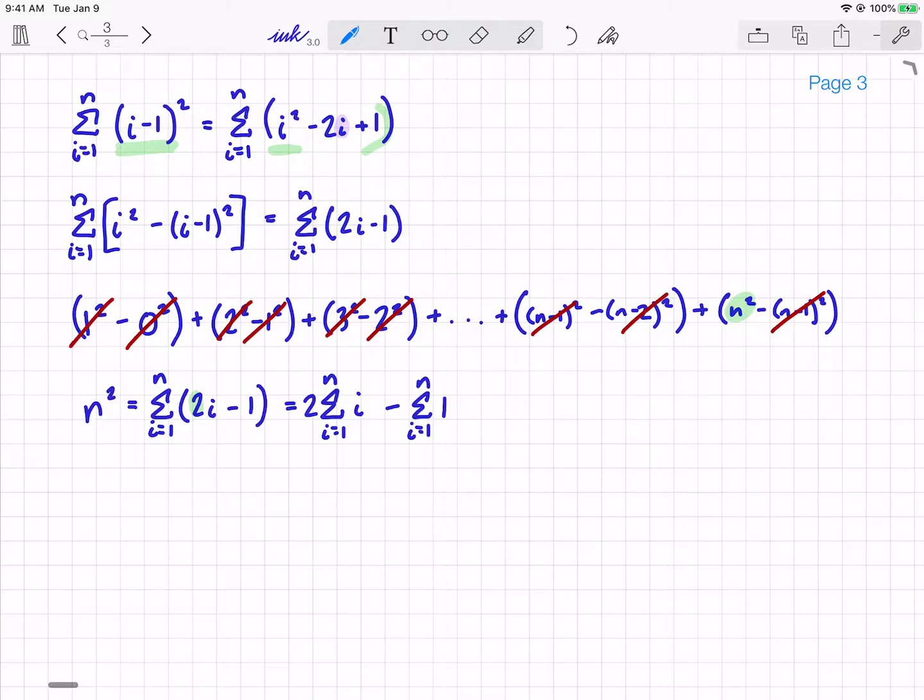Well, as we just showed, the sum of 1 from i equals 1 to n is just n. So then I get n squared equals 2 times the sum of i, which is what I'm looking for, minus n. So ultimately I'm going to divide the result by 2, and I get the famous formula that Gauss discovered. I get the sum of i from i equals 1 to n is (n squared plus n) divided by 2, which if you factor out an n is just n(n+1)/2.